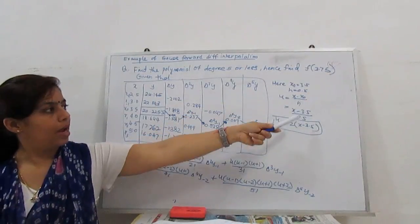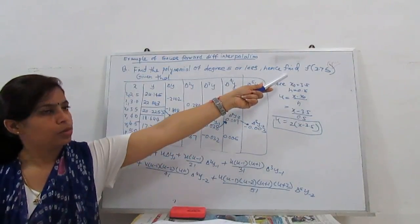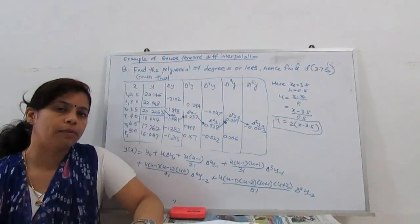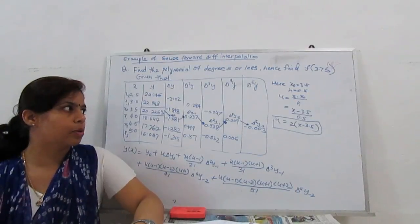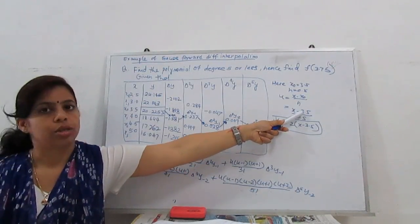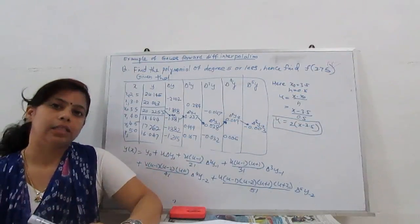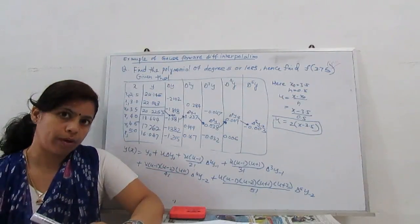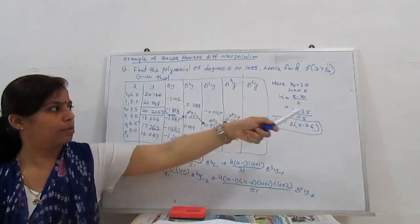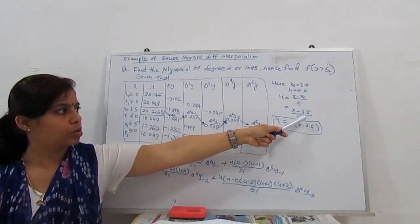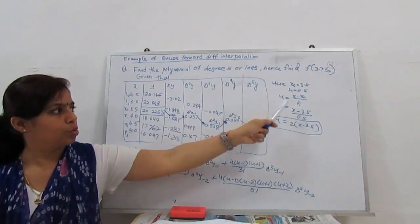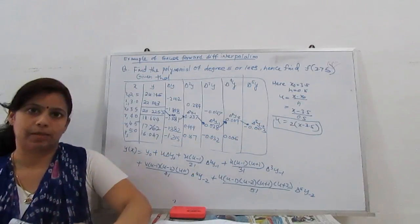We put x as it is, and later we can substitute x equal to 3.75 to find the value of the function at that point. So x is x, x₀ is 3.5, and h is 0.5. Our u becomes 2 times (x minus 3.5), because dividing by 0.5 is the same as multiplying by 2.